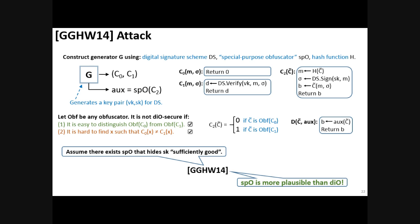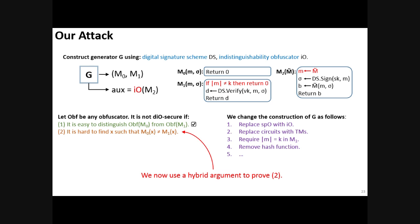Moreover, we only want to obfuscate this single circuit C2 for any specific digital signature scheme and hash function of your choice. So, all in all, it seems that special purpose obfuscation is more plausible than differing input obfuscation.